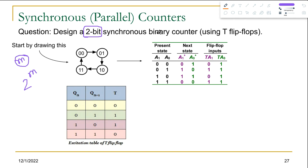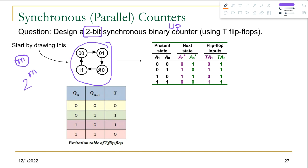We are building a 2-bit synchronous binary up counter. Up counter means that the values go from low to high — 0 to 1, 1 to 2, 2 to 3, and finally from 3 back to 0. So the 2-bit synchronous up counter transitions look like this: from 00 to 01, from 01 to 10, from 10 to 11, and then from 11 back to 00.